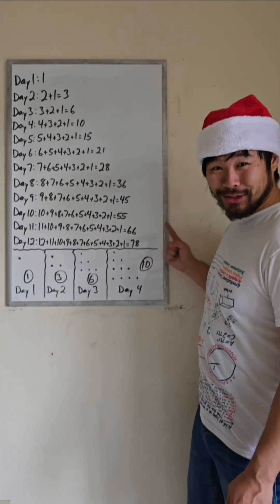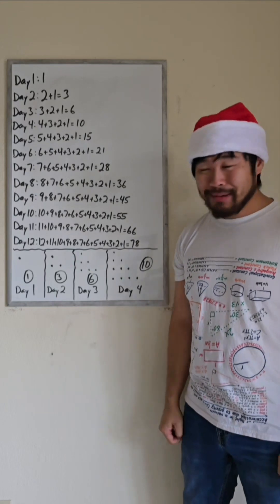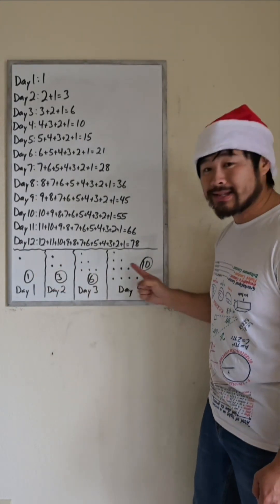All of these sums are triangular numbers, and they are called triangular numbers because we can draw these quantities in a triangle.